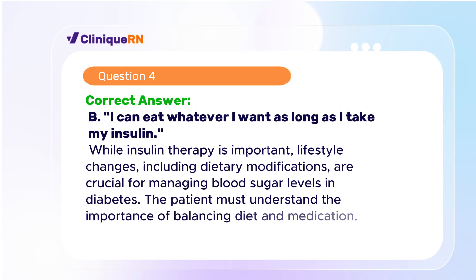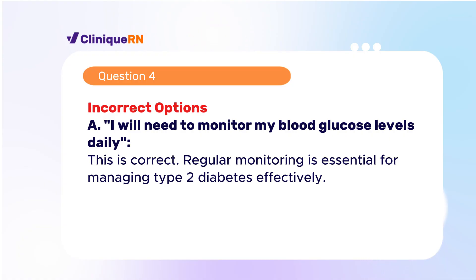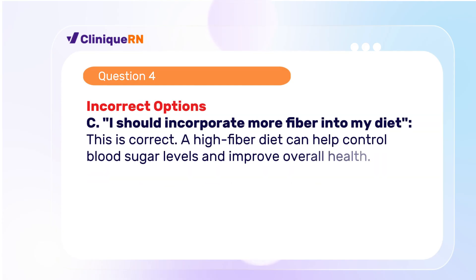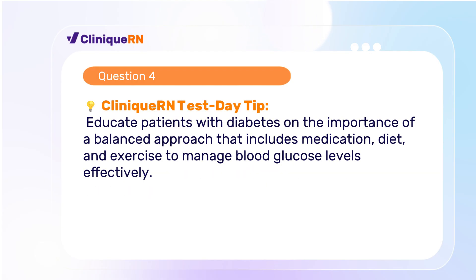The correct answer is B: I can eat whatever I want as long as I take my insulin. While insulin therapy is important, lifestyle changes including dietary modifications are crucial for managing blood sugar levels and diabetes. Regular monitoring of blood glucose is correct and essential. A high-fiber diet can help control blood sugar levels and improve overall health. Exercise is an important component of managing diabetes and improving insulin sensitivity. Educate patients with diabetes on the importance of a balanced approach that includes medication, diet, and exercise to manage blood glucose levels effectively.